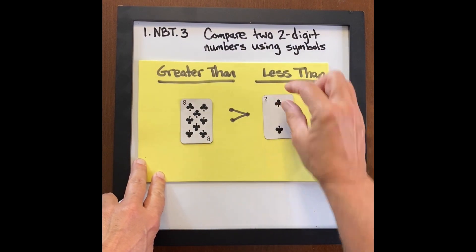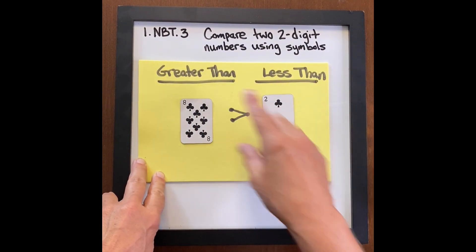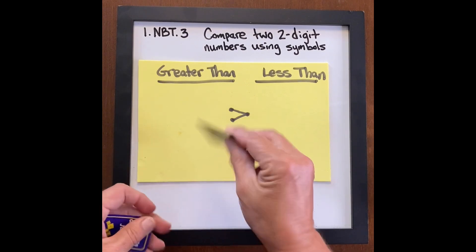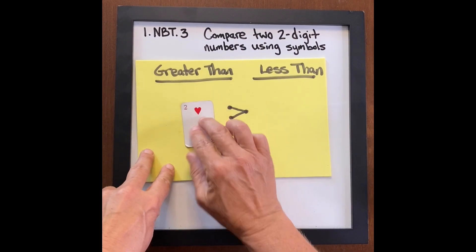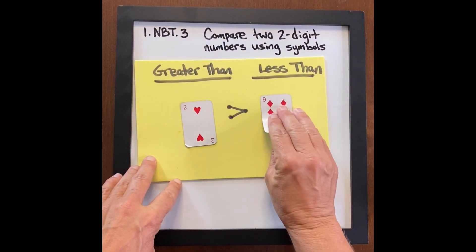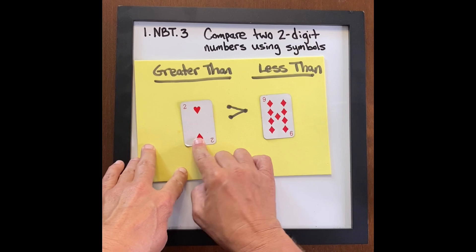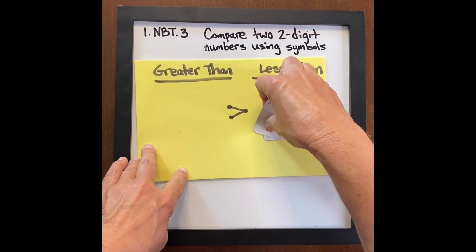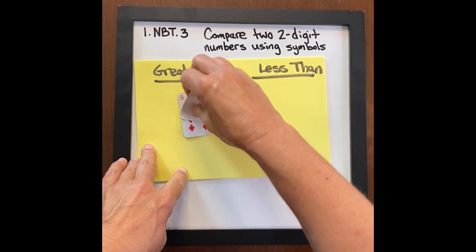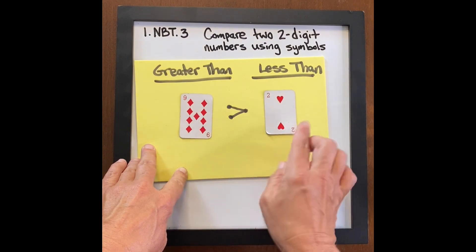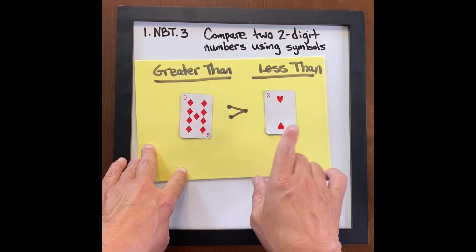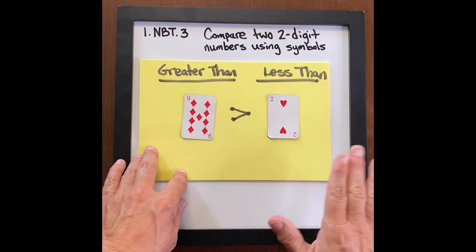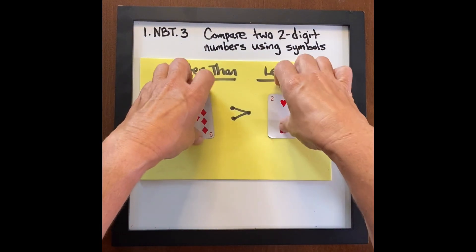Eight is greater than two — I'm constantly using that language. This is a very quick warm-up to practice this concept. Next we have two and nine. Two is not greater than nine, so that does not work and we have to make it work. Using that language, nine is greater than two.